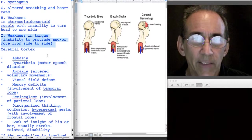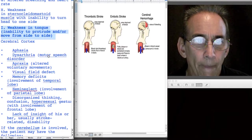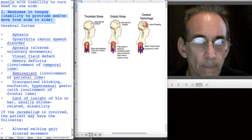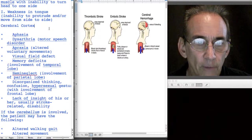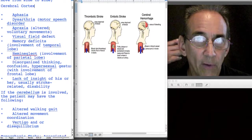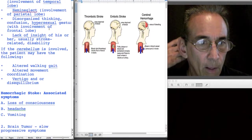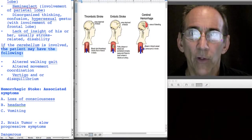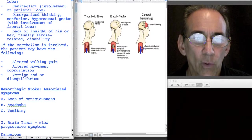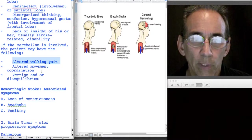They may also have difficulty moving their tongue, sticking their tongue out. If there's a cerebellar stroke, they're going to have altered gait, difficulty walking, difficulty with coordination.